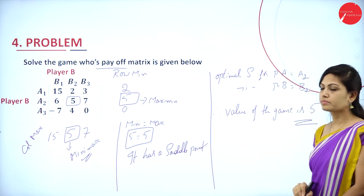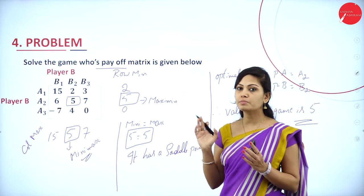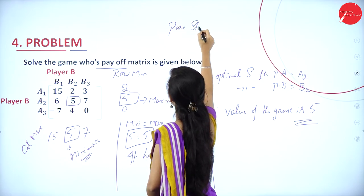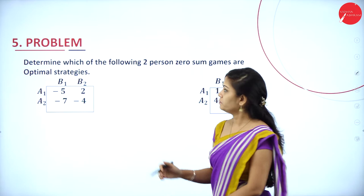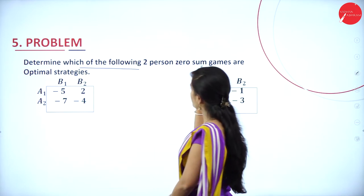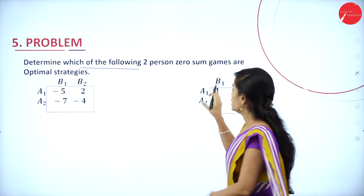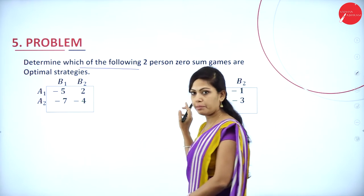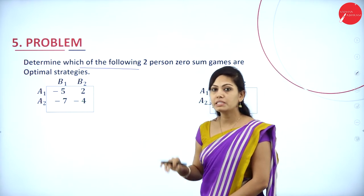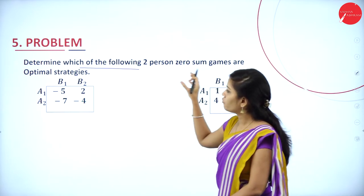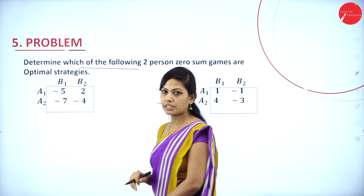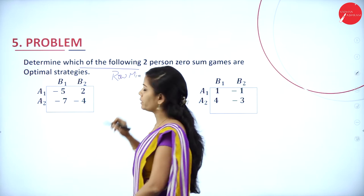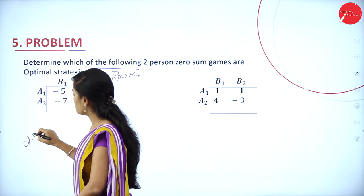This is your solution — it is a very simple concept based on pure strategy. Next problem: determine which of the following two-person zero-sum games have an optimal strategy. We have two games — Game 1 and Game 2. We use the same method: row minima and column maxima.